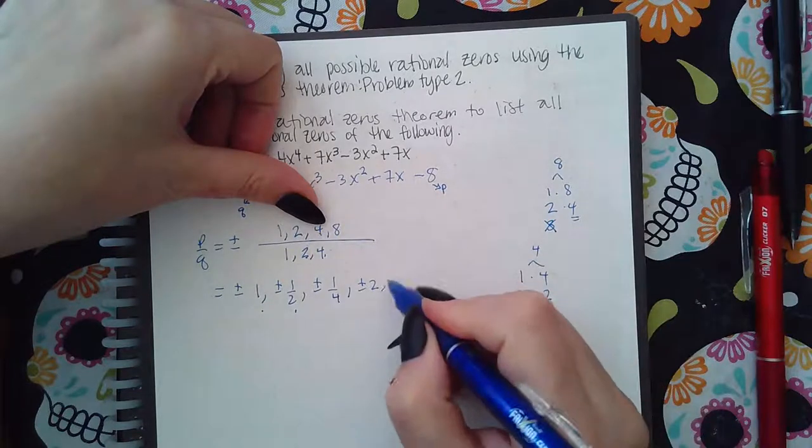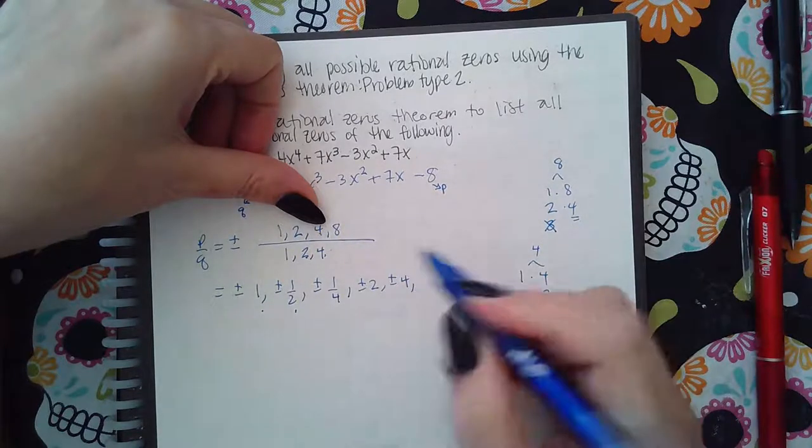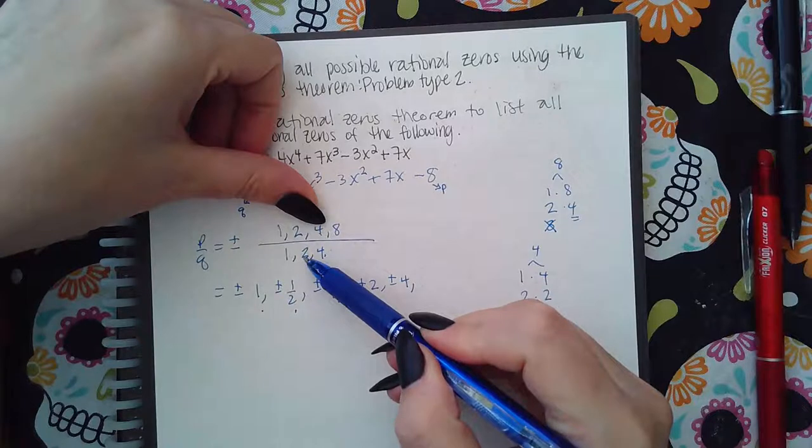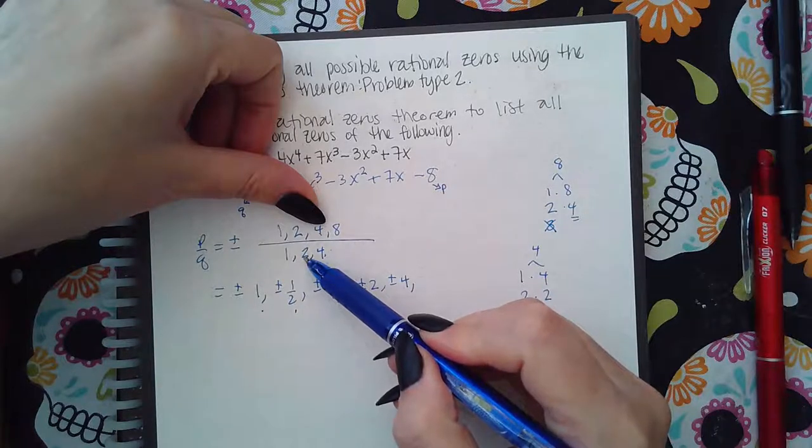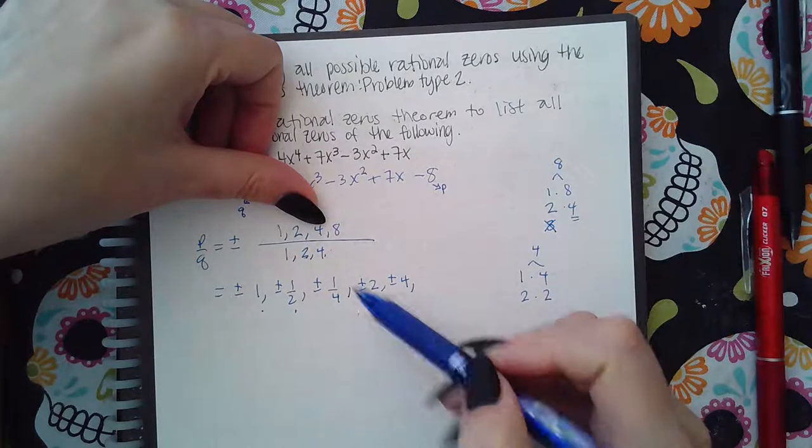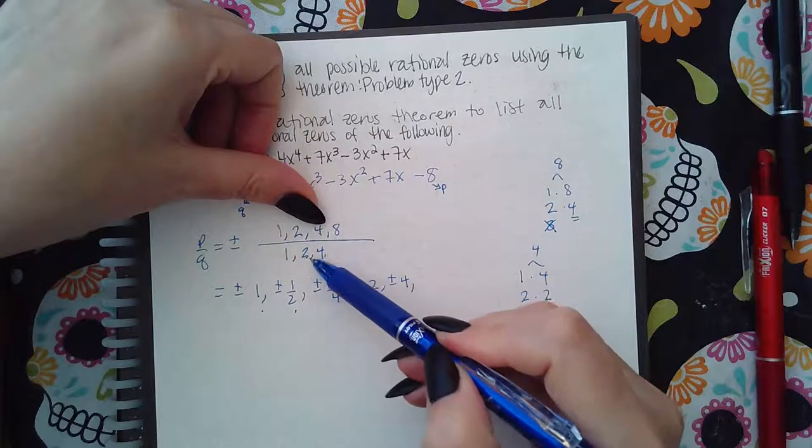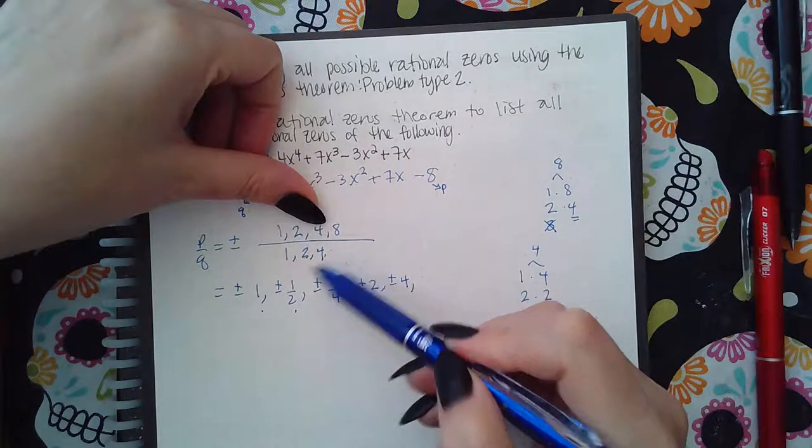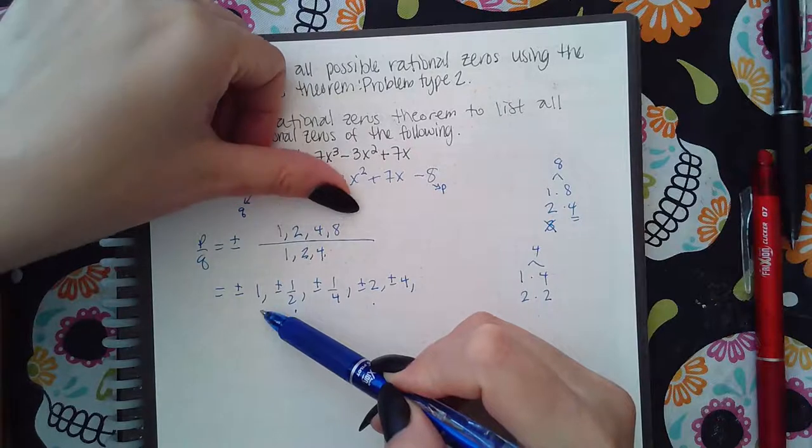4 over 1 is plus or minus 4. 4 over 2 reduces down to 2 which is already on the list. So we move on to 8.